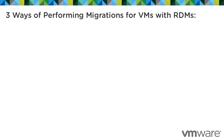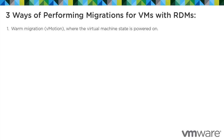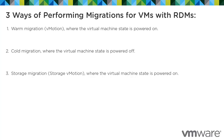Migrating virtual machines with RDMs can be performed in three ways: a warm migration using vMotion where the virtual machine state is powered on; cold migration where the virtual machine state is powered off; and storage migration with storage vMotion with the virtual machine state powered on.